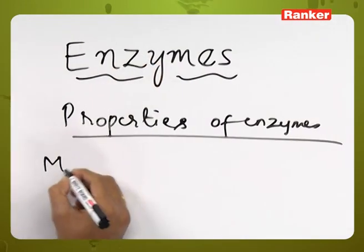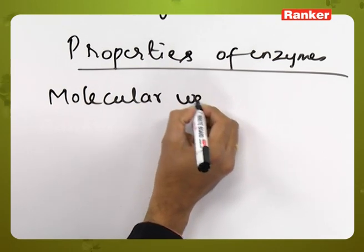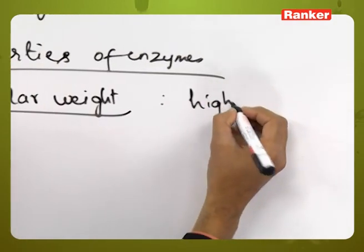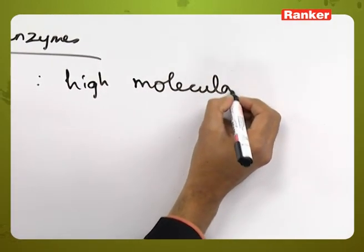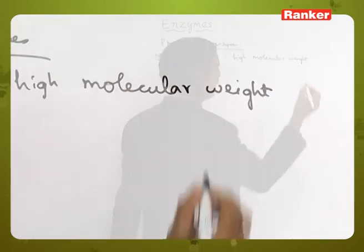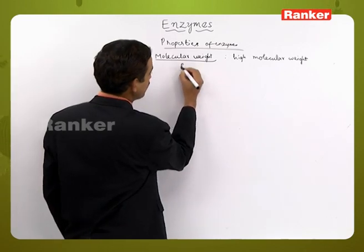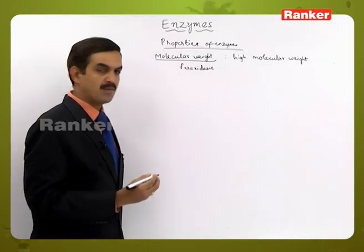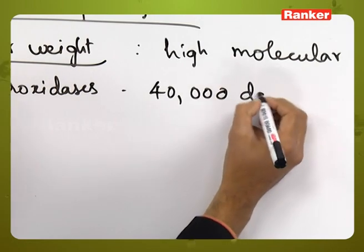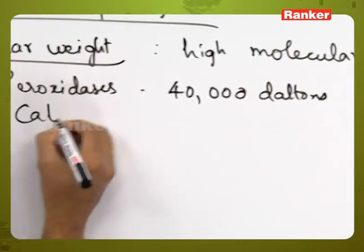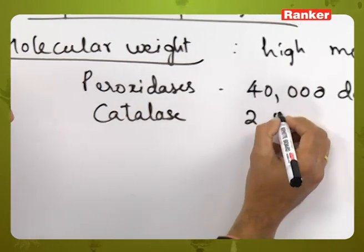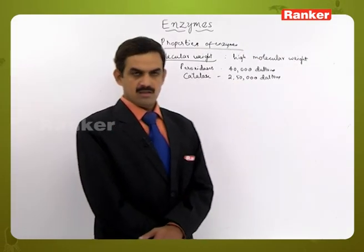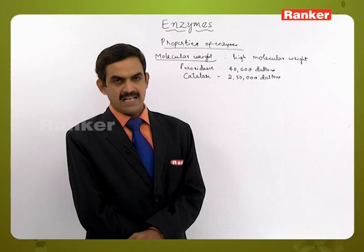The next property is molecular weight. Since enzymes are proteins, they have high molecular weight, which depends upon the number of amino acids present in the molecule. For example, peroxidase has a molecular weight of 40,000 daltons, while catalase has a molecular weight of 250,000 daltons. The molecular weight depends upon the nature of the protein or enzyme molecule.